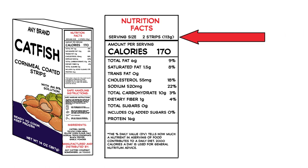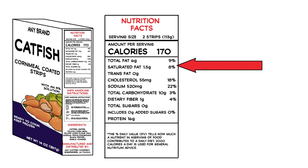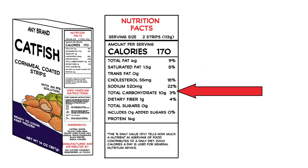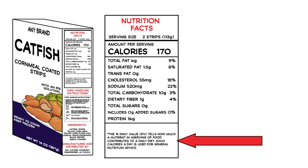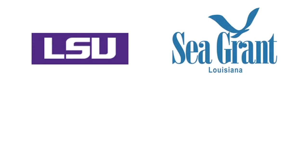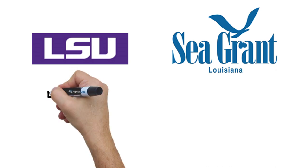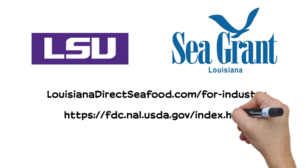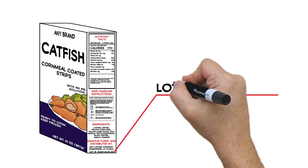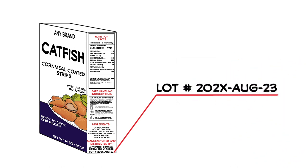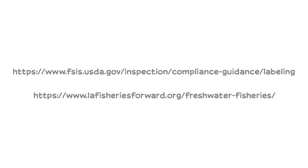The USDA requires that food products list serving size, calories, and the quantities of certain nutrients and nutrient groups in a specific format. Typically, the nutrition panel must also contain a footnote that explains the percent daily value. It can be overwhelming and expensive to create a nutrition label on your own — that's why LSU School of Nutrition and Food Science and Louisiana Sea Grant have a seafood scientist and experts to help. Visit the Louisiana Direct Seafood Industry page for a guide to the new nutrition label, or contact the seafood extension specialist for assistance. One final recommendation that is not required but helpful is adding a pack date or Julian code somewhere on the package, perhaps using a thermal stamp. This allows producers to track product in case of recall and for freshness. For more information, visit the FSIS website and the Louisiana Fisheries Forward Freshwater Fishery page.